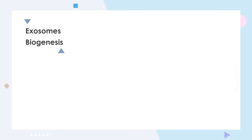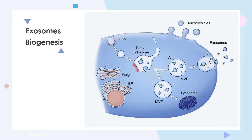Extracellular vesicles are nanoscale membrane vesicles which are actively released by cells. They occur through outward budding of the plasma membrane, or the microvesicles pathway, or inward budding by the inner body membrane, or the exosomal pathway.